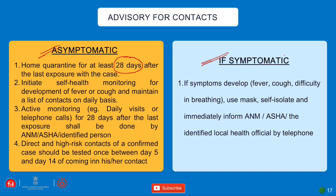High-risk contacts of a confirmed case should be tested once between day 5 and day 14 after contact. After 14 days they will be tested again. If you come under the symptomatic group with symptoms like fever, cough, or difficulty in breathing, use a mask, self-isolate, and immediately inform healthcare workers by phone so they can advise you on quarantine and treatment.